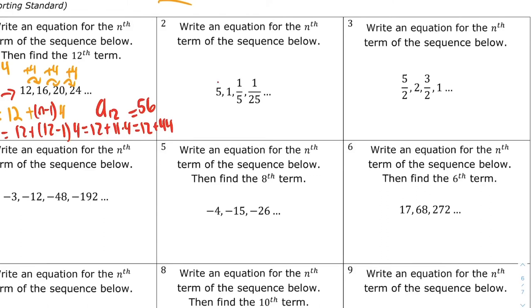And this next one, number two, we have a minus 4. Then we have a minus 4 fifths, and then it changes from there. So that is not arithmetic. No common difference.